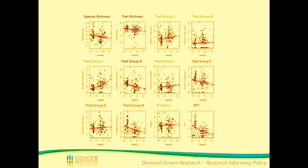Those predictions generally held up, although there is a large amount of scatter in the data, suggesting other factors are also contributing. With increasing flow intermittency or zero flow days, we found an increase in trait group C. We also found a decrease in numbers of EPT taxa, which are generally thought to be less tolerant species in terms of water quality. Similarly, we found a decreasing trend in trait group F and trait group H.